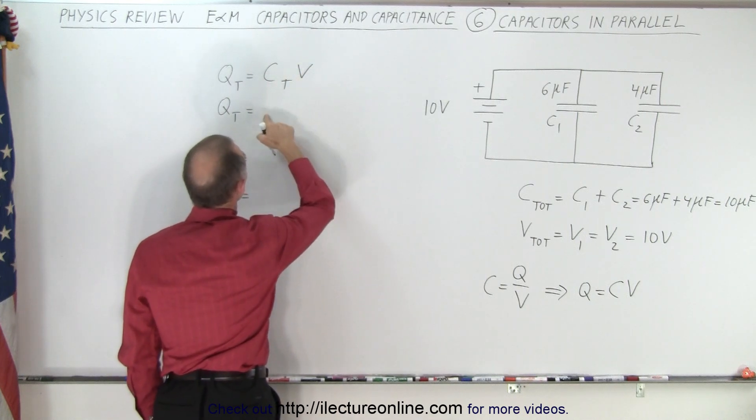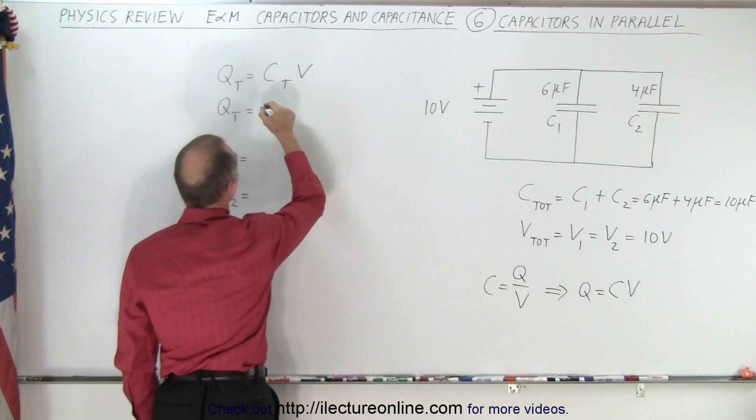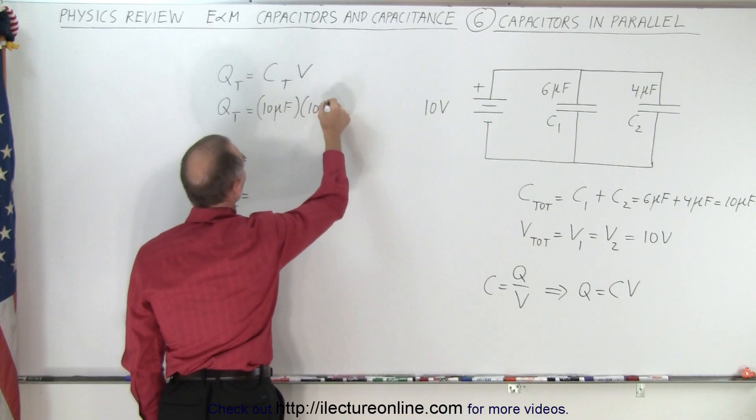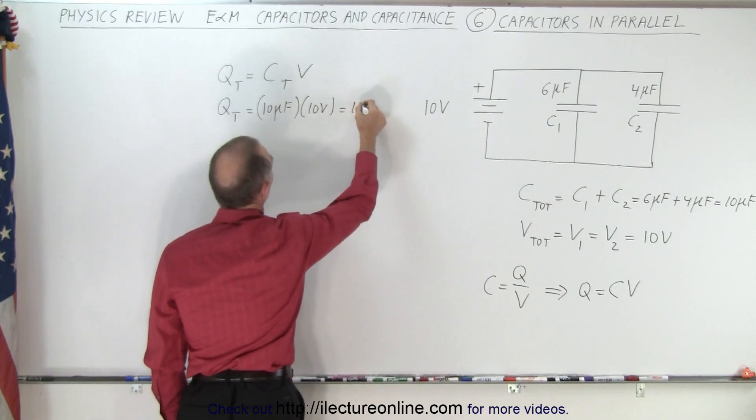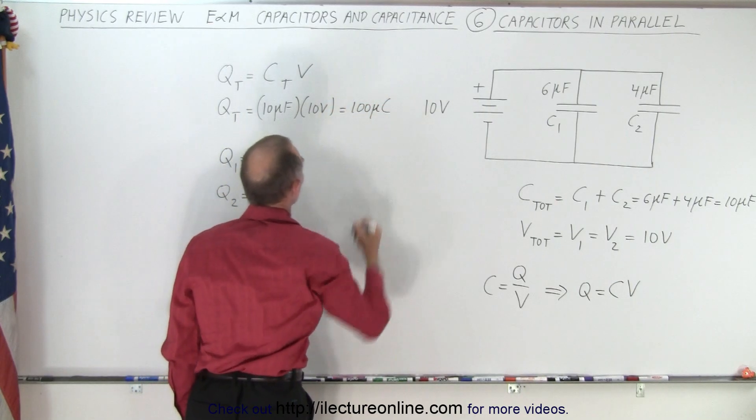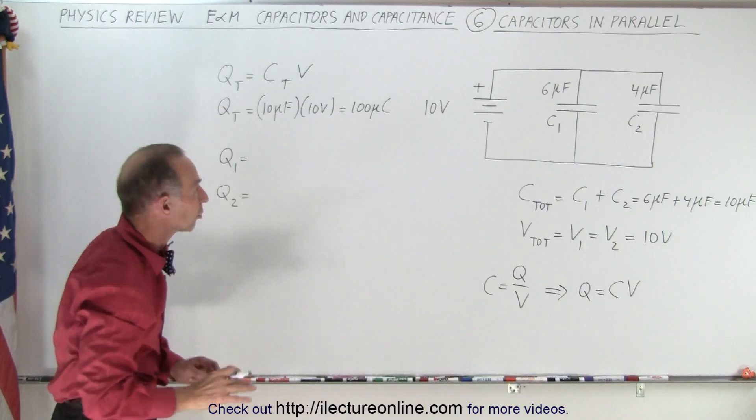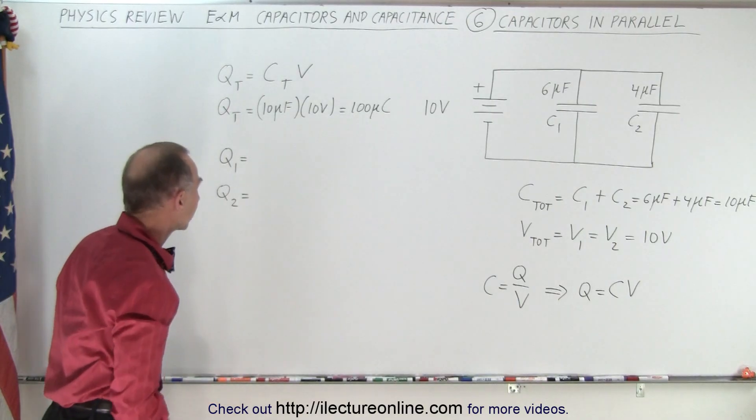And so in this case, that's the total capacitance, which would be 10 microfarads multiplied times 10 volts, which would be equal to 100 microcoulombs. So that's how you calculate the total charge on all the capacitors.